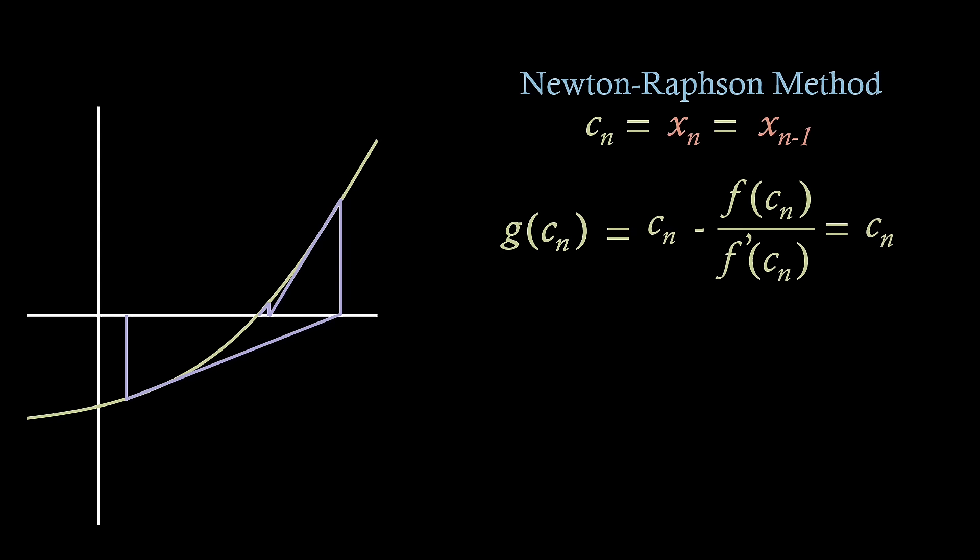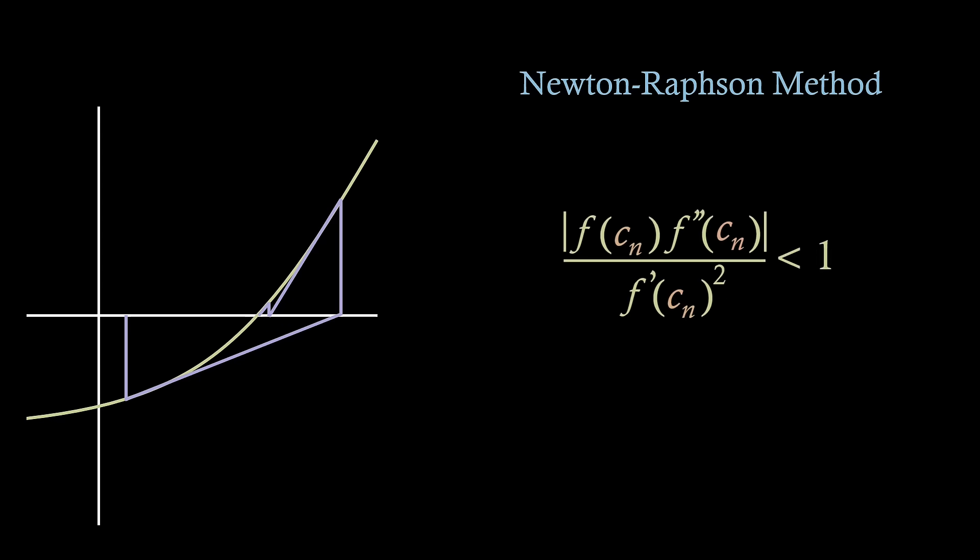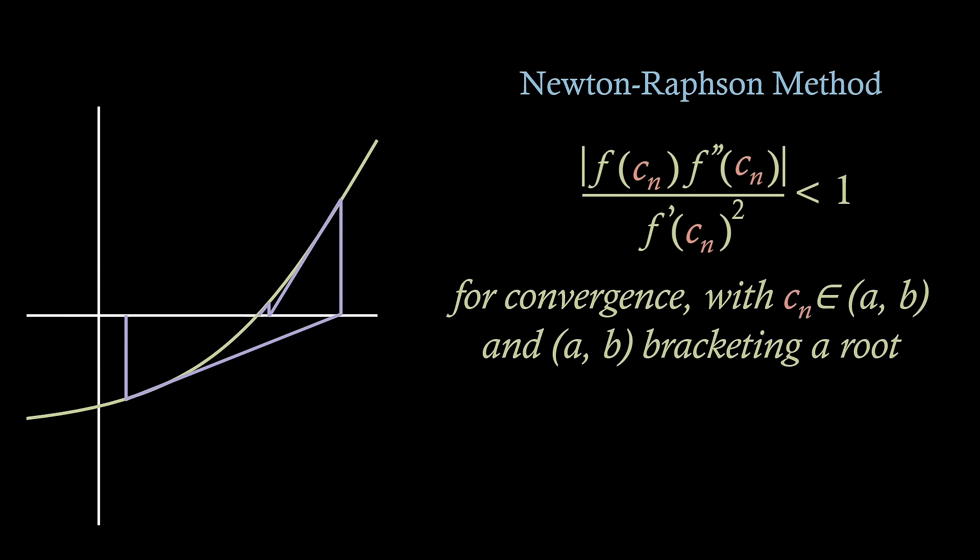Say we define this as a function g. Now, this may look more familiar. This is the formula we had for the fixed-point iteration method with respect to the roots being at cn. Hence, using the result of convergence for the fixed-point iteration method, we see that we need the absolute value of this function g to be less than 1. Differentiating this middle expression, we see that the requirement for convergence is that the absolute value of f times the second differential over the first differential squared, all evaluated at cn, needs to be less than 1. Whereas before, cn is within a and b, and a and b brackets the root.